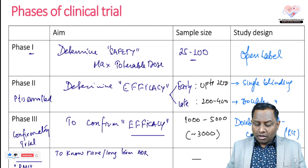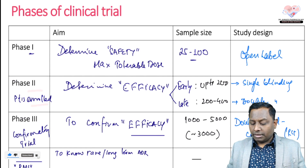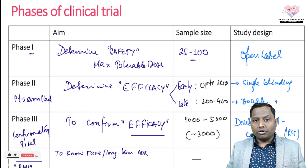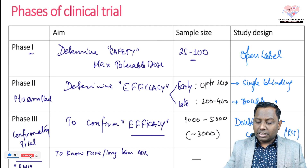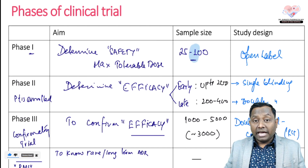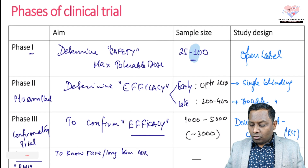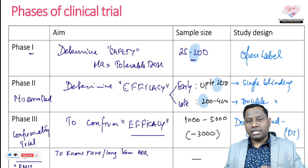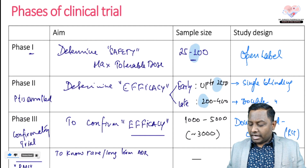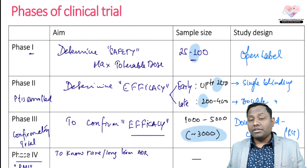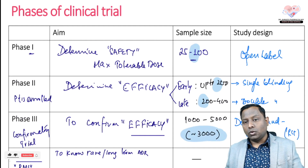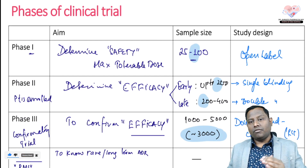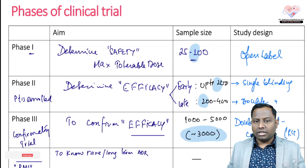Phase 2: patients enrolled for the first time, main aim is to determine efficacy. For sample sizes — Phase 1 is around 100 to 200, Phase 2 is around 200 to 400, and Phase 3 is around 1000 to 5000, with an average of about 3000.